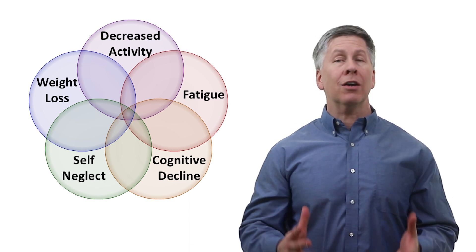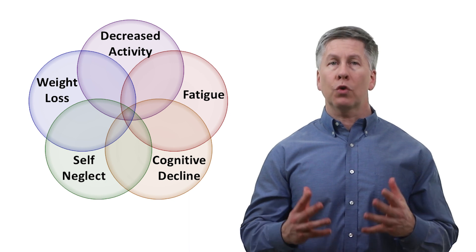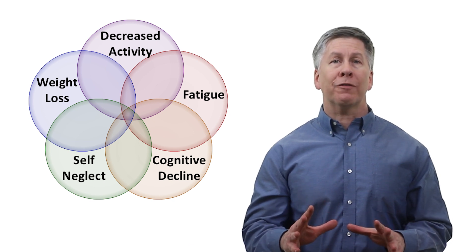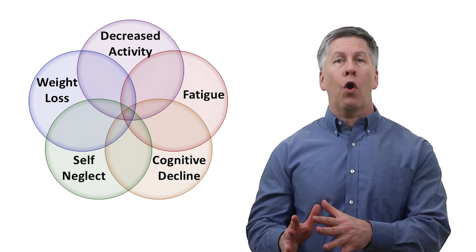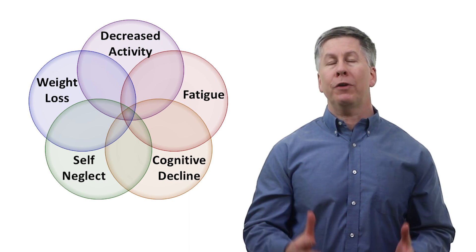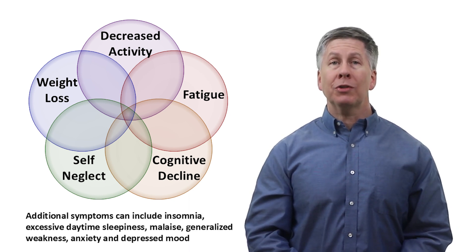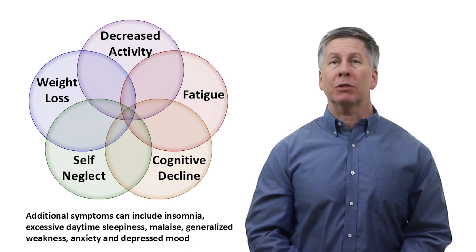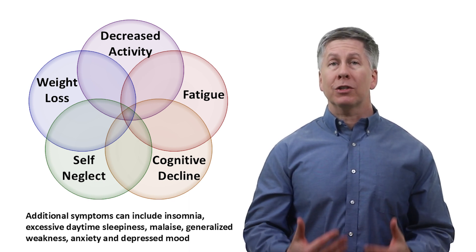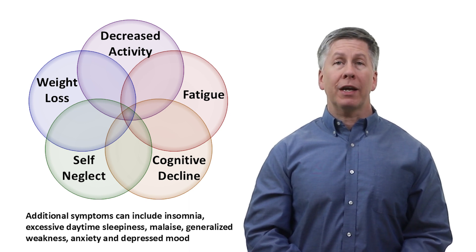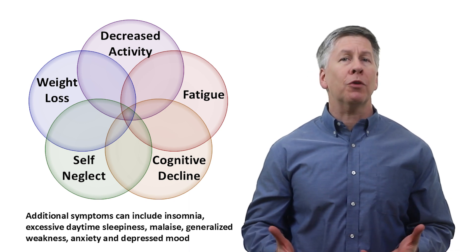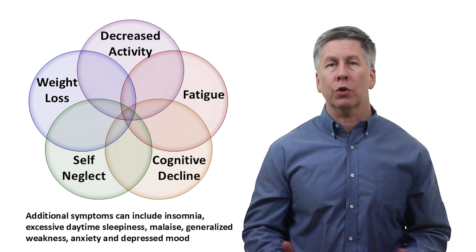Patients can present with any combination of these five core symptoms, although if presenting with only one of them, it might be best to frame the presentation around that one symptom rather than around a more global failure to thrive. Additional symptoms that frequently occur in this syndrome include insomnia, excessive daytime sleepiness, malaise, general weakness, anxiety, and depressed mood. For those not familiar with malaise, it refers to the vague sense of feeling unwell that most of us have experienced briefly during viral illnesses like influenza or COVID.